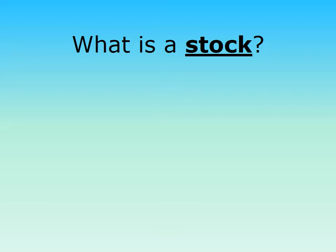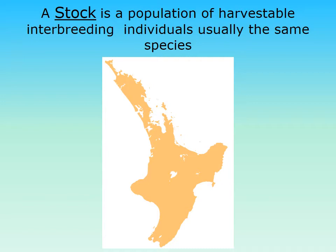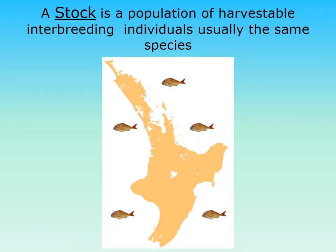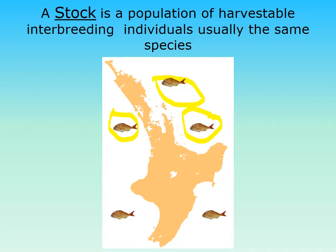With the first definition, your stock. The question is: what is a stock? We'll talk about this more in class, but here's your definition: a population of harvestable, interbreeding individuals, usually the same species. Let's look at these fish — we've got snapper in each of these pictures. We've got some down at Hawke's Bay, some in the Bay of Plenty, Northland, and the West Coast. They're all the same species, they're all snapper, and they're harvestable. But are they interbreeding? Are they an interbreeding population?